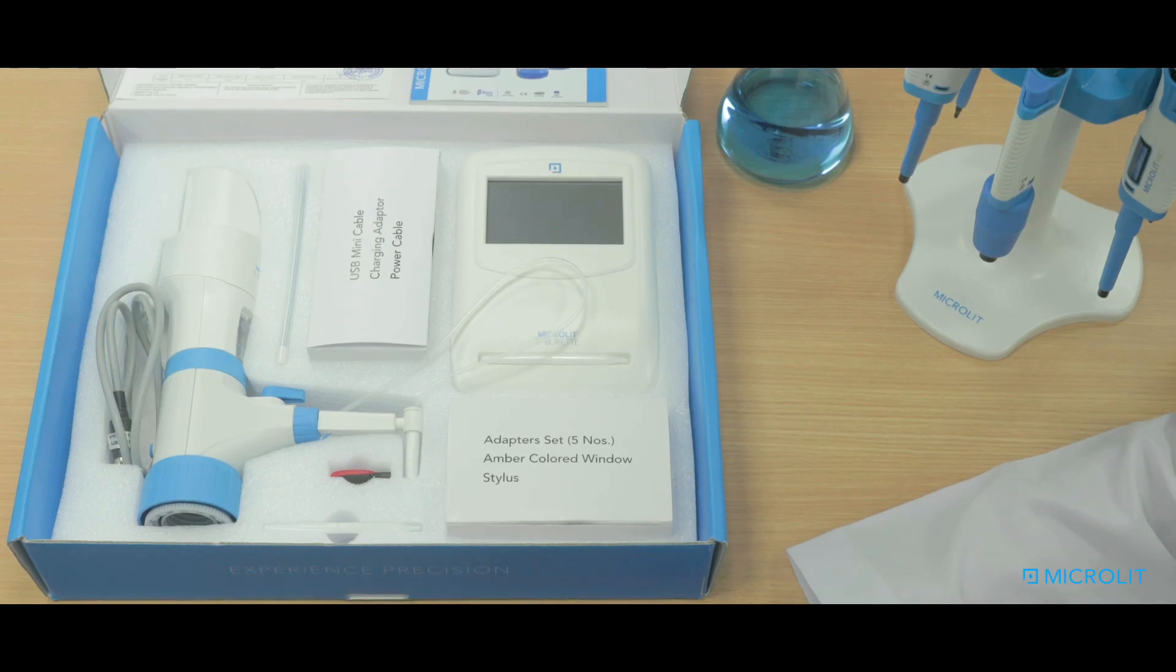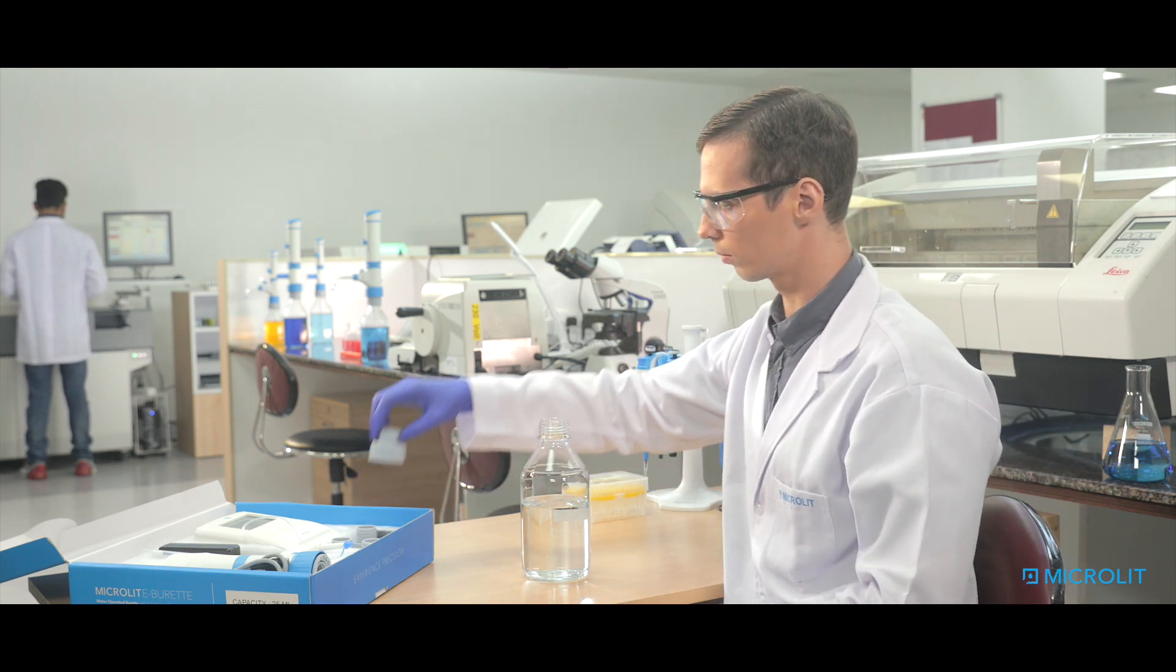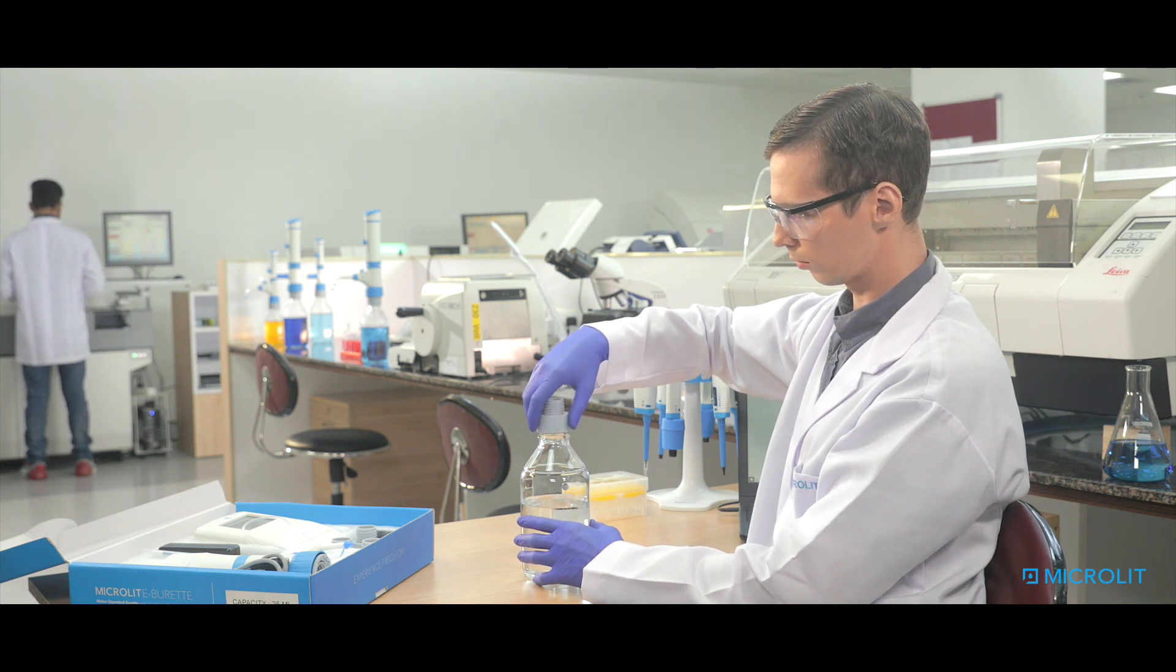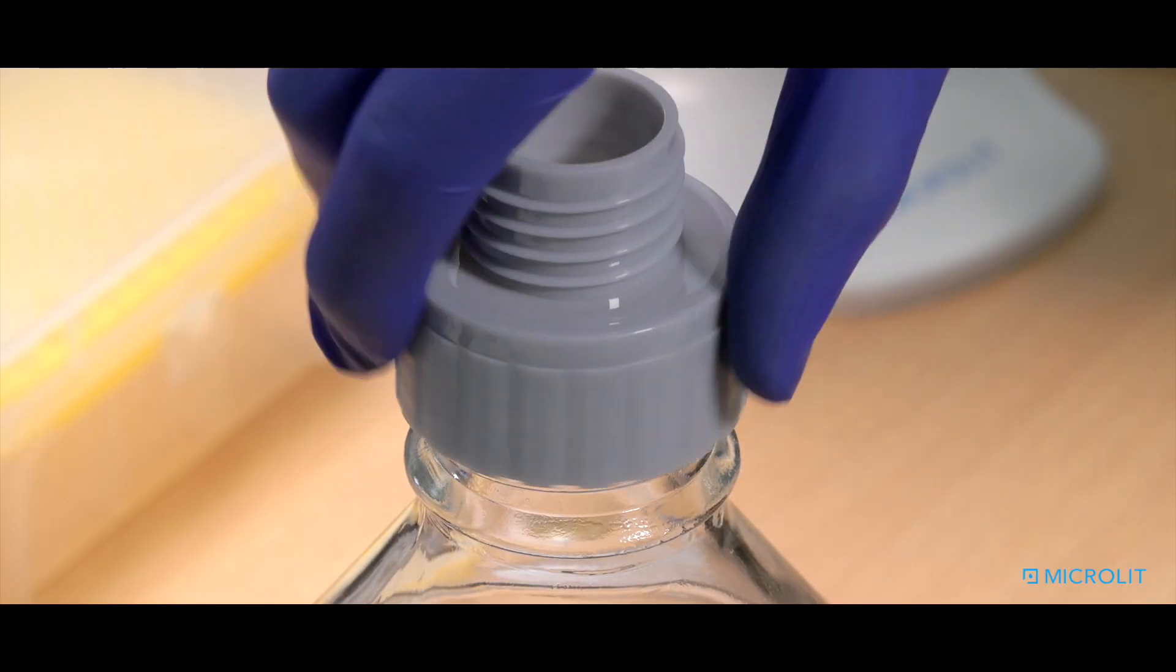Microlit eBuret is quite easy to assemble. First, out of the five available adapters, choose the desired adapter and fix it on the reservoir bottle by screwing it in a clockwise direction.